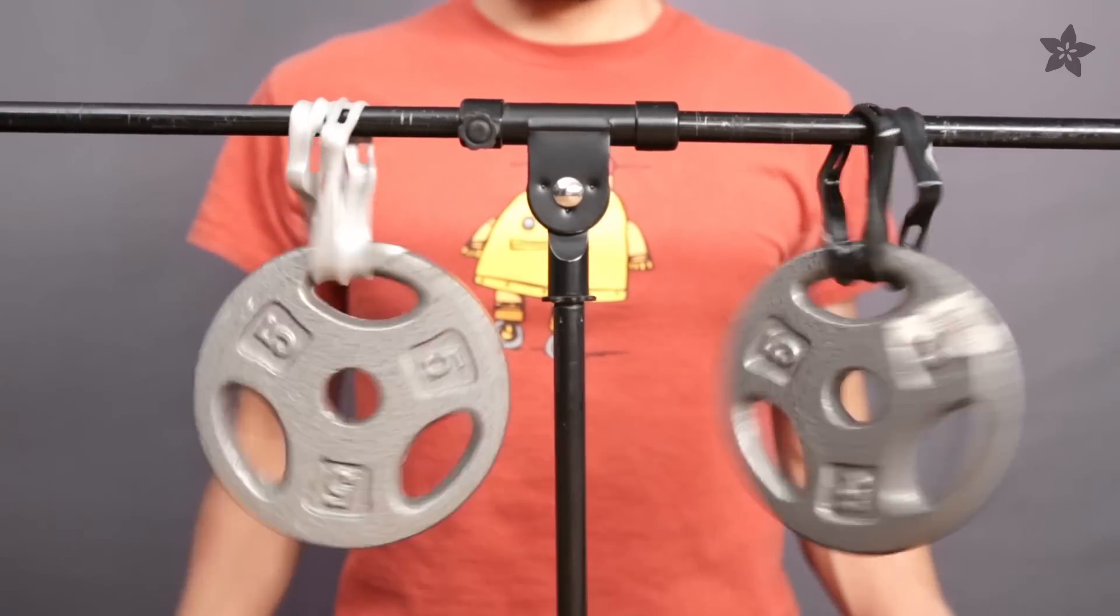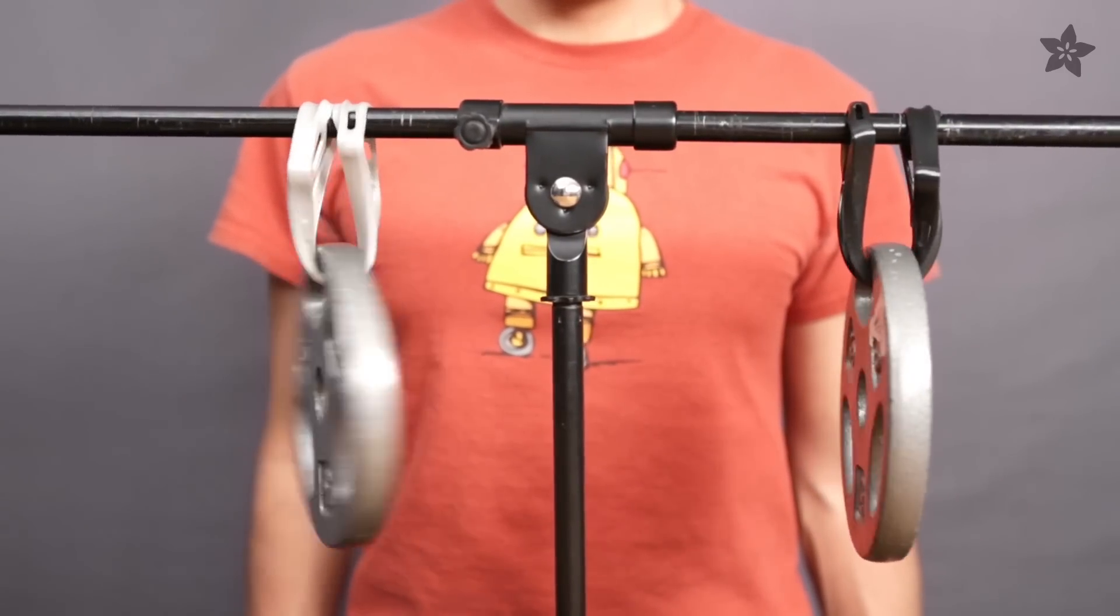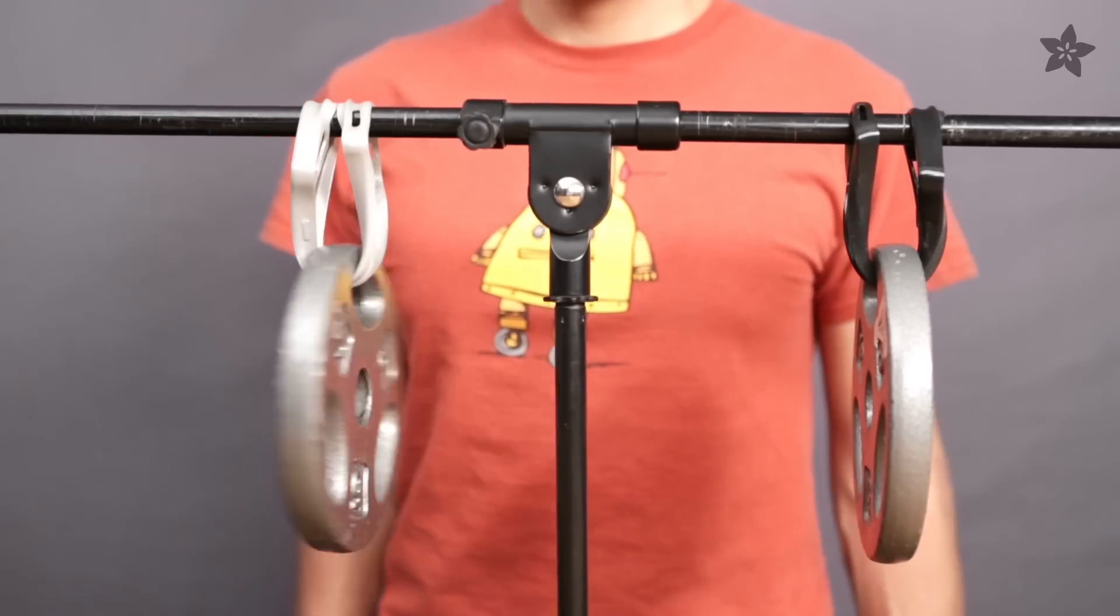Other differences are that the original Ninjaflex has more elasticity, but Semiflex has less elongation with more pull strength.